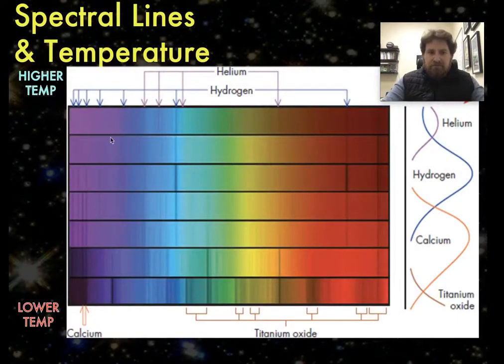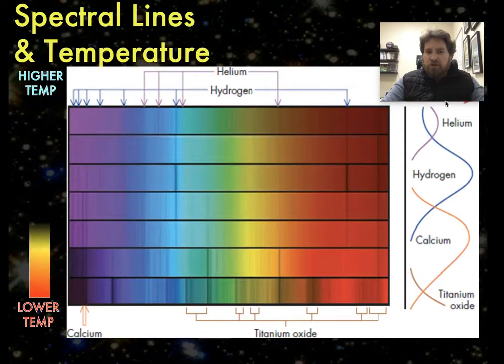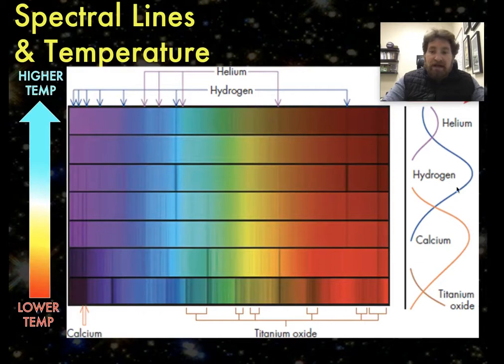So as an example, higher temperature stars tend to show more prominent helium lines, whereas medium temperature stars tend to show more prominent hydrogen lines. As the star gets cooler, cooler stars show more prominent calcium lines. And the coolest of stars show very prominent titanium oxide lines.